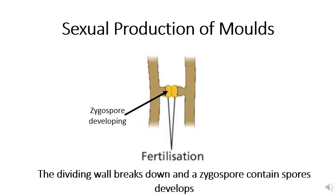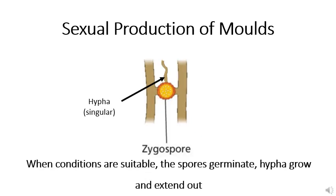Now that the two hyphae have been joined together, the wall that once divided them begins to break down. Where this wall breaks down is where a zygote spore is going to form. A zygote spore is basically a ball full of individual spores. Now that the zygote spore has formed and conditions are favourable, a single hyphae begins to grow from that zygote spore, and at the top of that hyphae we're going to see a sporangium filled with the spores that were once in the zygote spore.